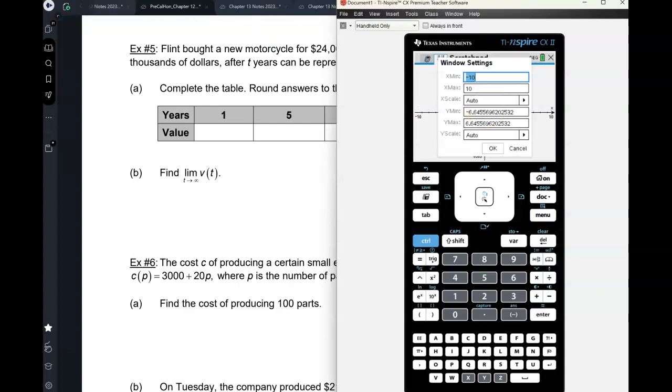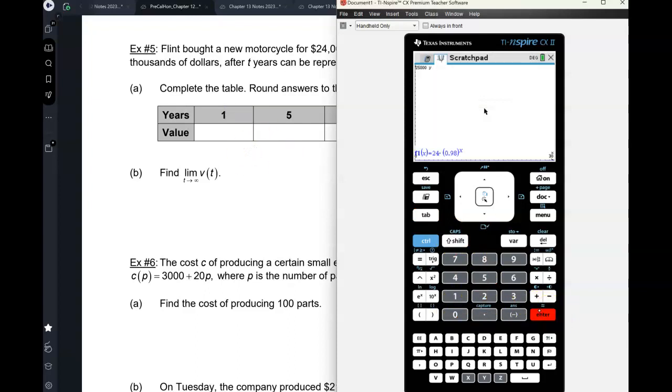Okay, x represents the number of years after you've bought the car, so we're going to go from zero to, I don't know, I'm going to say maybe like 30 years. And then we bought this for, so we're going to go zero to $24,000. Why don't I do $25,000 just so I have a cushion.